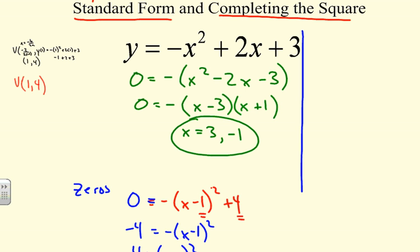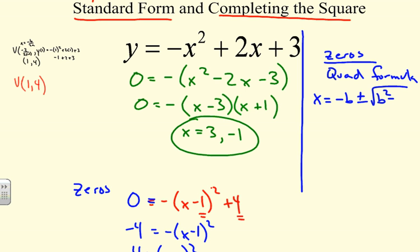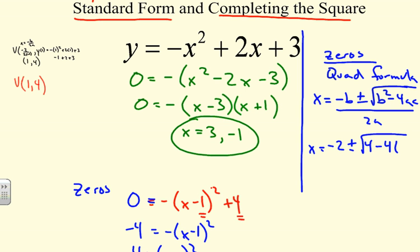Another way to find the zeros is the quadratic formula: x equals the opposite of b plus or minus the square root of b squared minus 4ac, all over 2a. Plugging in values — opposite of negative 2, plus or minus the square root of 4 minus 4 times negative 1 times 3, all over 2 times negative 1 — simplifies to give us 3 and negative 1.